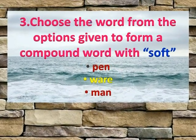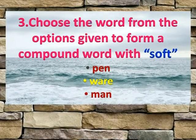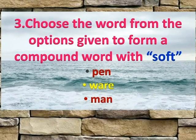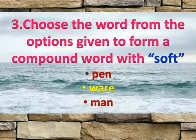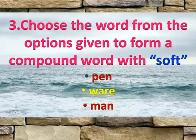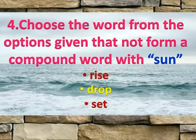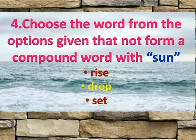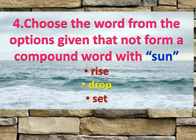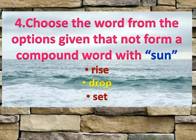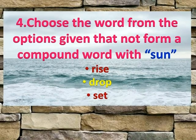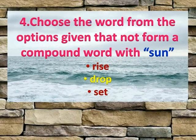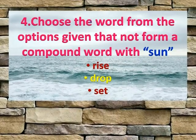The third type is to choose the word from the options given to form a compound word with 'soft.' There is no compound word such as 'soft pen' or 'soft man' — the right option is 'software.' The fourth type is to choose the word that does not form a compound word with 'sun.' The compound words are 'sunrise' and 'sunset,' but 'sundrop' is not a compound word — therefore, the right option is 'sundrop.'